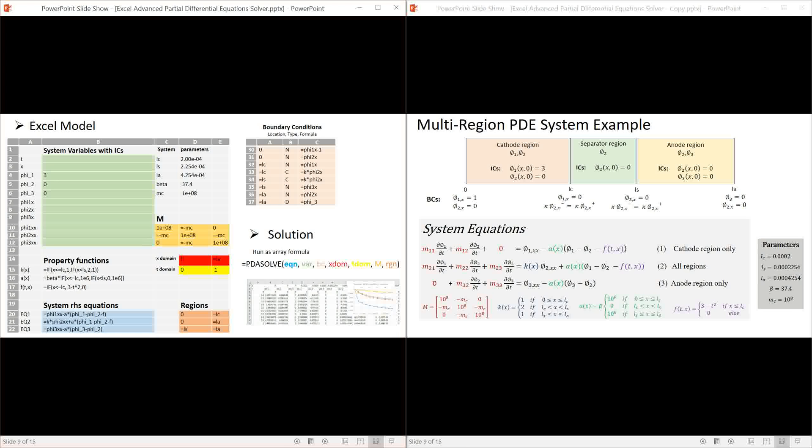In the orange range to the right of my equations I define the valid region for each equation. The boundary conditions are defined in the pink range A30 to C37. Each boundary condition is defined in a row recording its location, type and formula. The formula is always written with respect to zero on one side. Here we have a combination of Dirichlet and Newman boundary conditions as well as two continuity conditions on phi2 flux at x equal LC and LS. This is pretty much all that is needed to model the system in Excel.